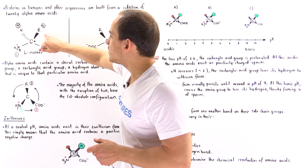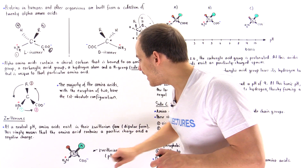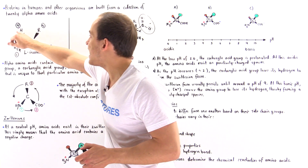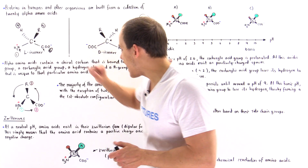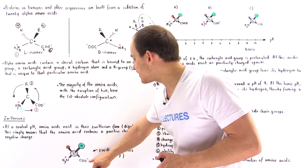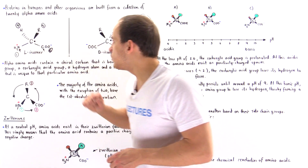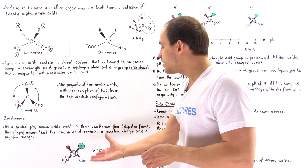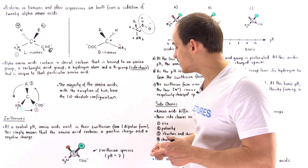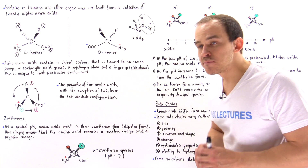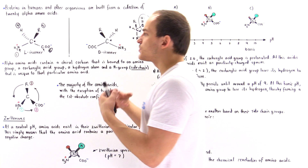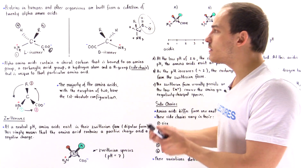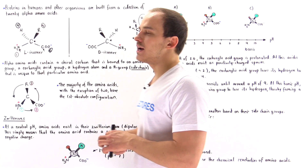We can redraw this so the center carbon is shown clearly, with the H atom in orange, the R group in green, the carboxylic acid group with its negative charge, and the amino group with its positive charge. This is the dipolar or zwitterion form. Because most cells and solutions inside our body have a pH of around seven, the majority of amino acids exist in this zwitterion form.